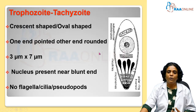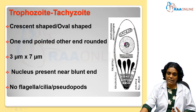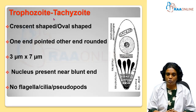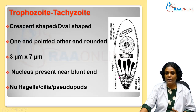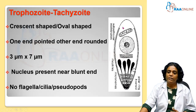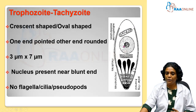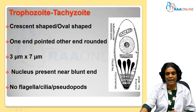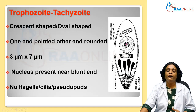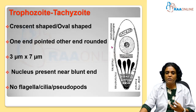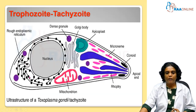Coming to the morphology of the trophozoite, also called tachyzoites, they are the actively multiplying forms of the parasite. They are crescent shaped or oval shaped — it is from this structure that we got the name Toxoplasma. One end of the tachyzoite will be pointed and the other end will be rounded, the blunt end. Towards the blunt end, you will be able to see the nucleus. The size of the tachyzoite is 3 to 7 micrometers. Although they are actively multiplying, they do not have flagella, cilia, or pseudopodia, but they are motile by a special form of motility called gliding motility.